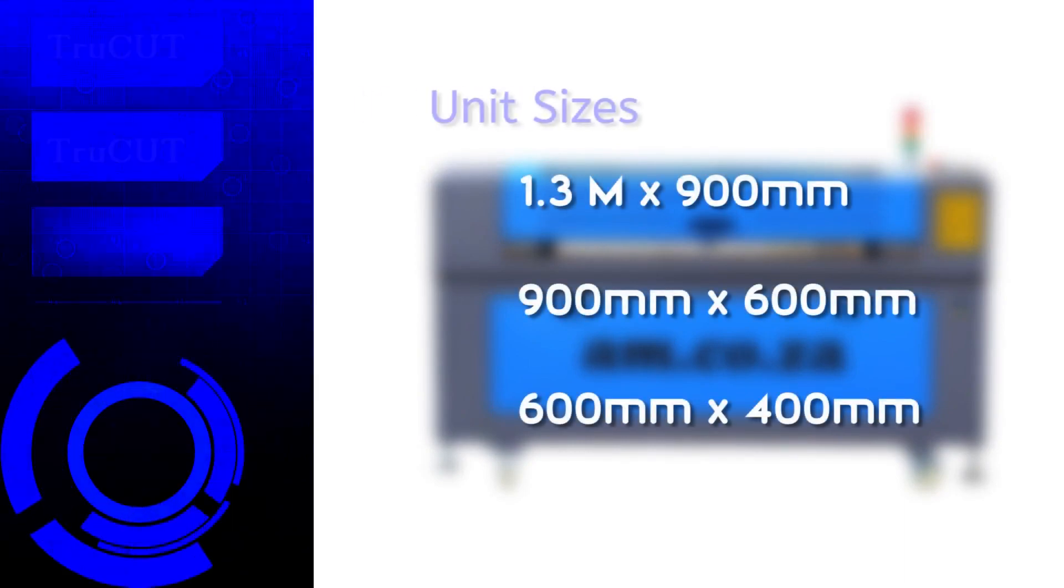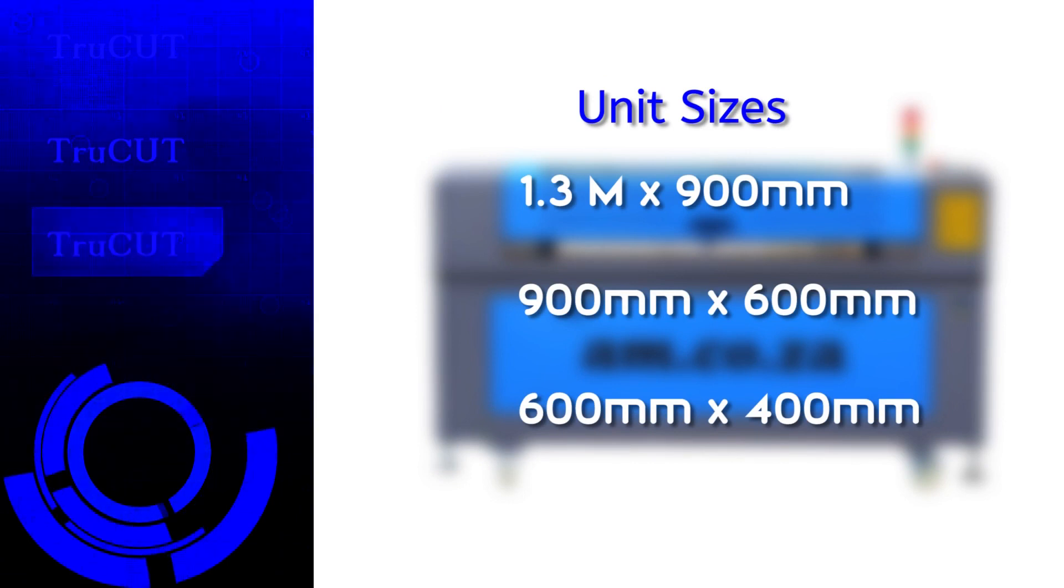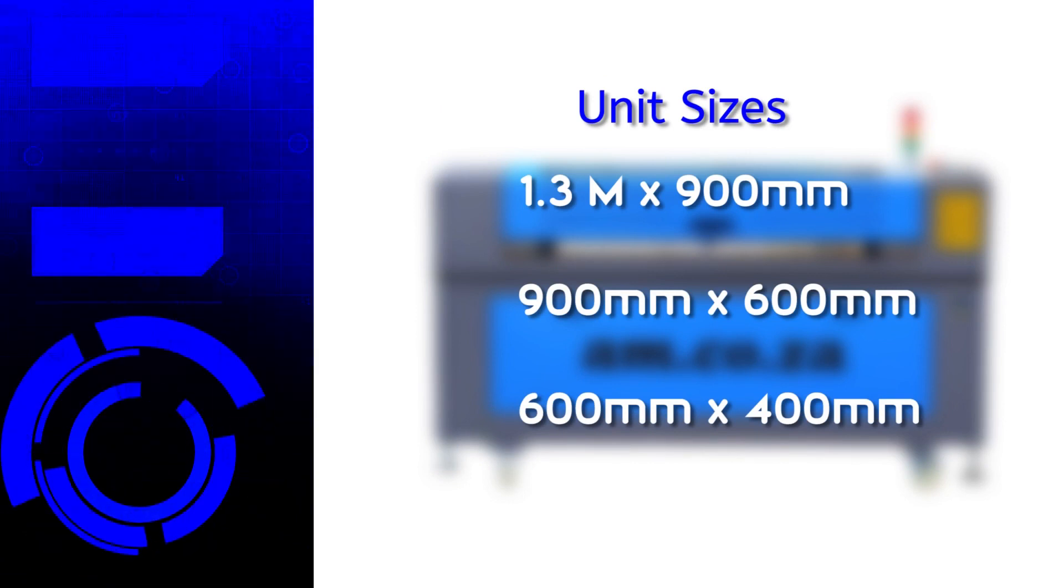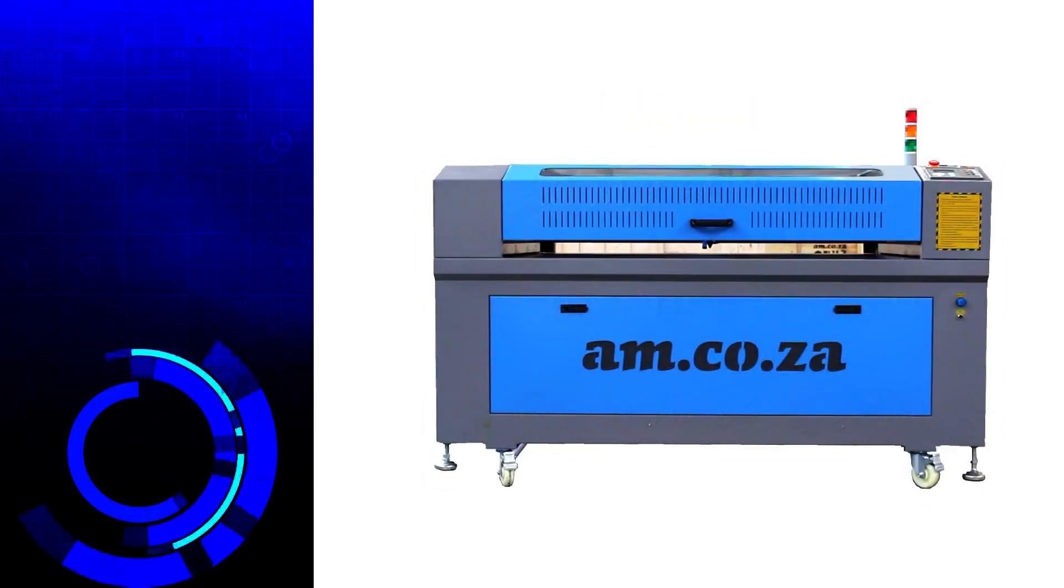The TrueCut laser cutting and engraving machine comes in three sizes: 1.3 meter by 900 millimeter, 900 by 600 millimeter, and 600 by 400 millimeter units, all of which boast the same features.